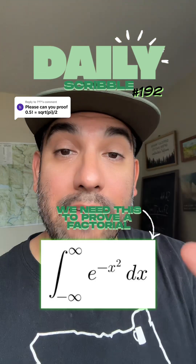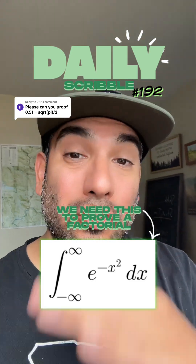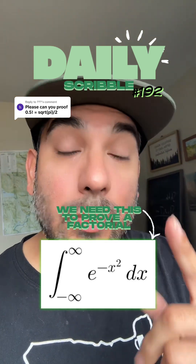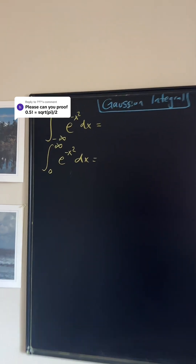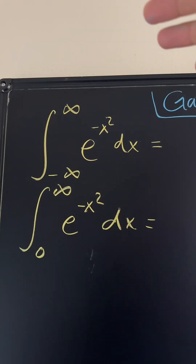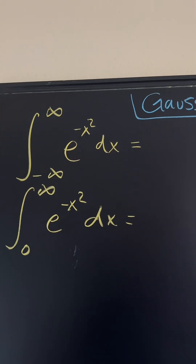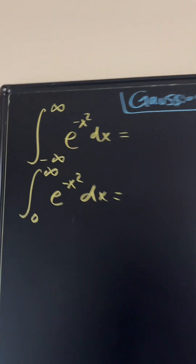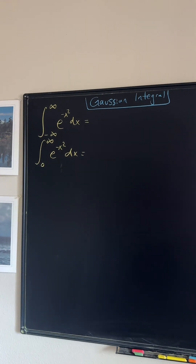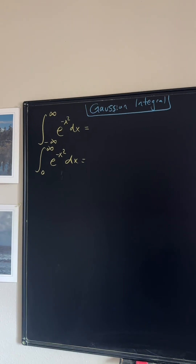I have a goal: I want to prove that one half factorial is equal to the square root of pi over two, but I can't do that until I show you the Gaussian integral. This is the Gaussian integral — the integral from negative infinity to infinity of e to the negative x squared. The Gaussian integral is extremely important in areas like stats and probability, and it has a very neat result: it's just the square root of pi, but I'm going to show you why that's the case.